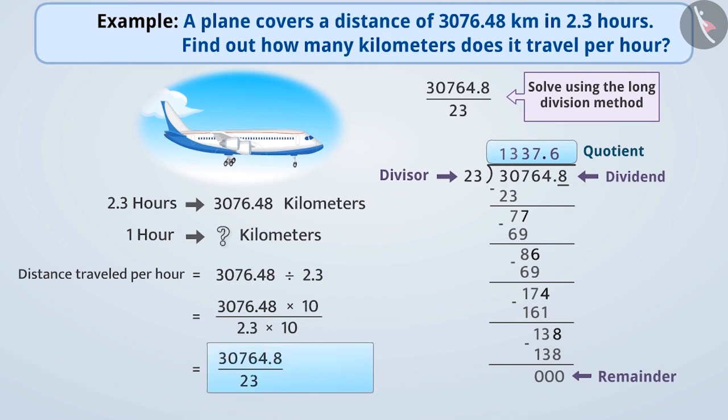Thus, the aeroplane travels 1337.6 km per hour.